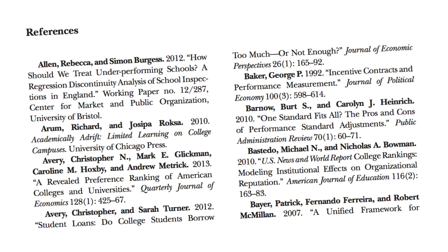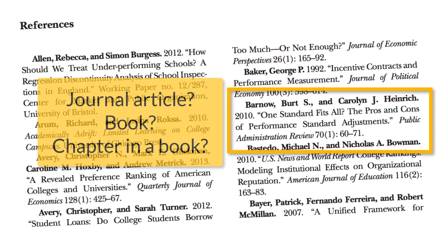An important part of the research process is using citations to track down sources. In order to do this, you need to be able to tell what type of source the citation refers to. Is it a journal article? Is it a book? Is it a chapter in a book?